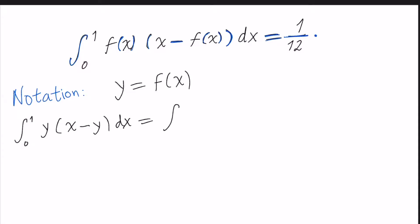So I won't do anything about the integral. I will just multiply the terms: yx minus y squared dx. Now we will try to complete squares here. So how can we do that? We can put minus integral 0 to 1 of y squared minus yx dx.